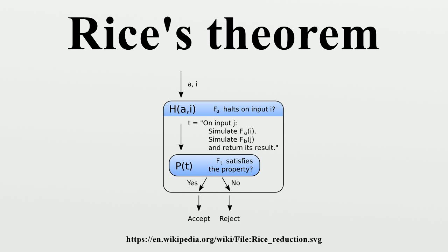Assume that the algorithm represented by A does not halt on input I. In this case F_T equals F_{no_halt}, i.e., the partial function that is never defined. Since P(no_halt) = no, and the output of P depends only on F, it follows that P(T) = no, and therefore H(A, I) = no. Since the halting problem is known to be undecidable, this is a contradiction, and the assumption that there is an algorithm P that decides a non-trivial property for the function represented by A must be false.